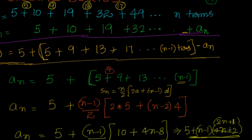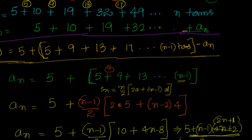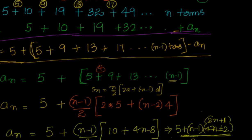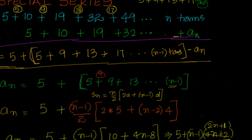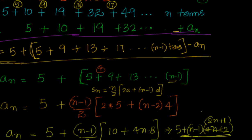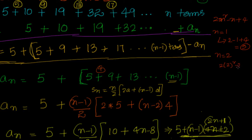I want to make sure we got it correct. I'll substitute n = 1, 2, 3 and check whether I get the terms of the series. The equation is 2n² - n + 4. For n = 1: 2 - 1 + 4 = 5. Good. For n = 2: 2×4 - 2 + 4 = 8 - 2 + 4 = 10. So I got the second term also.